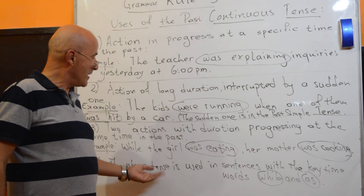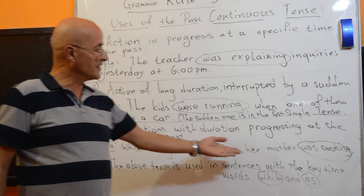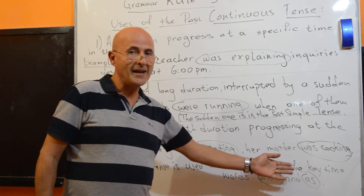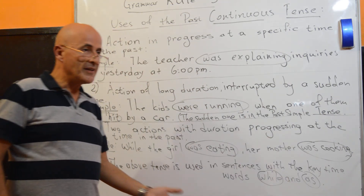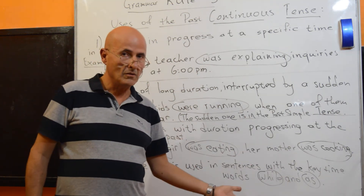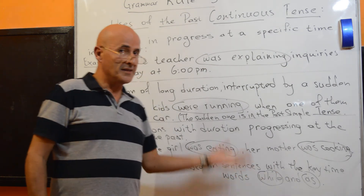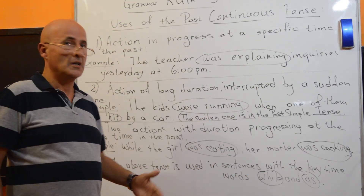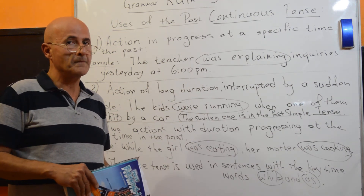Finally, the past continuous tense is used in sentences with the key time words 'while' and 'as.' In other words, if in a sentence you see either the word 'while' or the time word 'as,' the tense you must use is the past continuous tense of the verb.